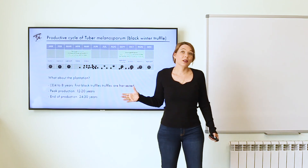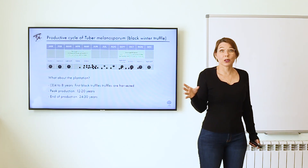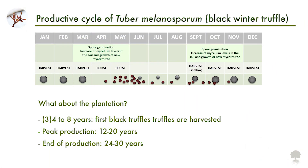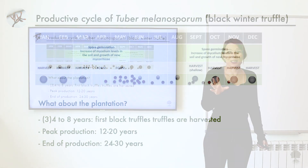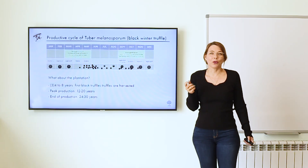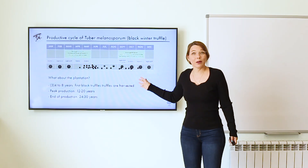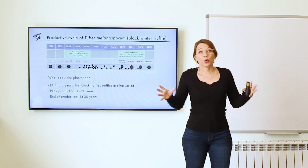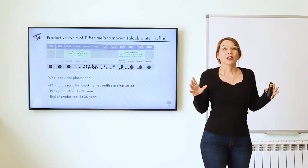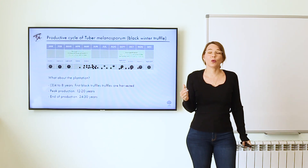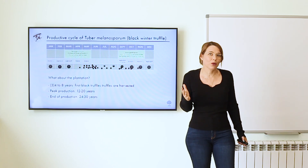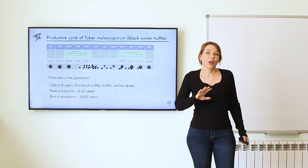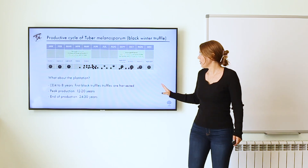For the plantation timeline: if you do a good job in a suitable location, by year three or four you should get the first truffles — but that will only confirm things are working, not provide real income. For things to get fun and start generating high yields, you have to wait until year 10–12, depending on how fast the trees develop. The highest production stage lasts until year 20–24, with some examples reaching 30. After that, production drops off quite fast within three or four years.